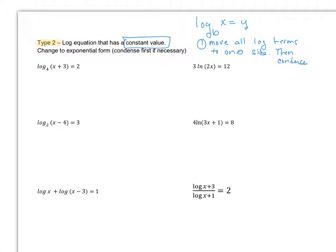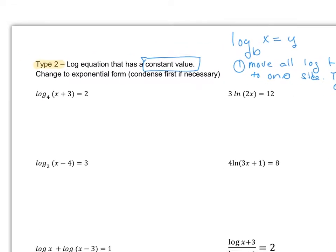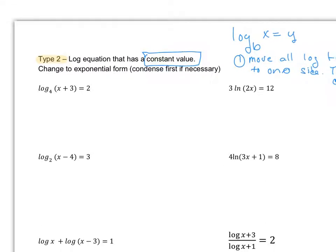Now, if I'm looking over here that I have for my first equation, let me just give myself a little bit more room as I'm doing this. This one's already condensed, so I don't have that step with this. But after you've moved all the log equations to one side and condense them, then my second step, step 2, is to change into exponential form.